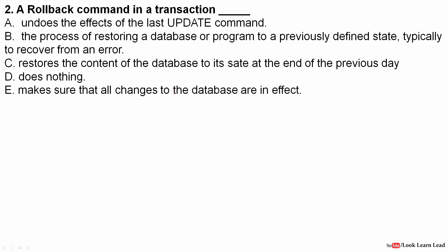The next question: a rollback command in a transaction — this is a DBMS question. What rollback actually does is revert to a previously defined state. For example, suppose we have a stable state S1, and after some time a breakdown occurs, so we change the system back to that stable state. Looking at the options: it does not only undo the last update command — it can undo many commands. The correct answer is: the process of restoring a database or program to a previously defined state, typically to recover from an error.